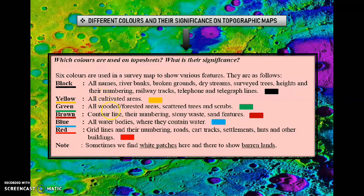Firstly, black. All names are written in black. Broken ground, river banks, dry streams, survey trees, heights and their numbering — such as benchmark, relative height, triangulated height etc. Railway tracks, telephone and telegraph lines will also be black in color.